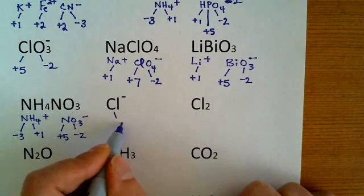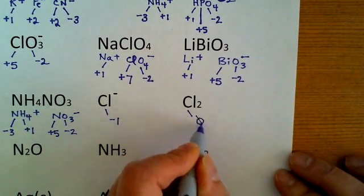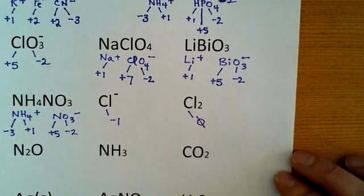Chloride ion is the easiest one on here. Or maybe this is the easiest. Chlorine gas, oxidation state of zero.